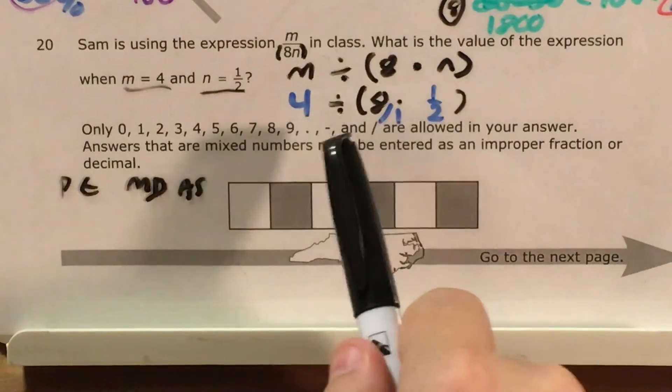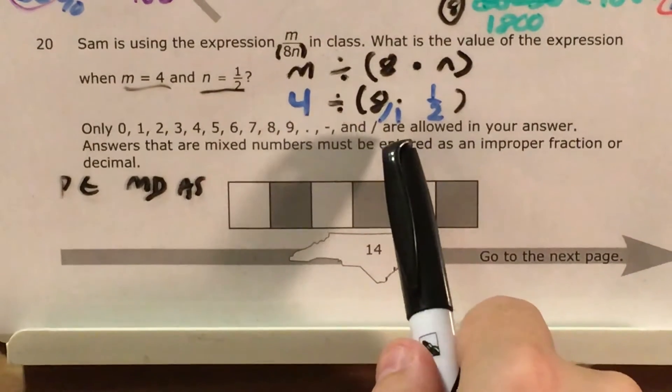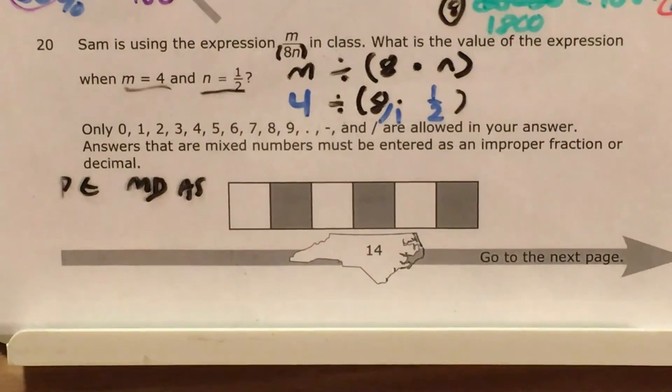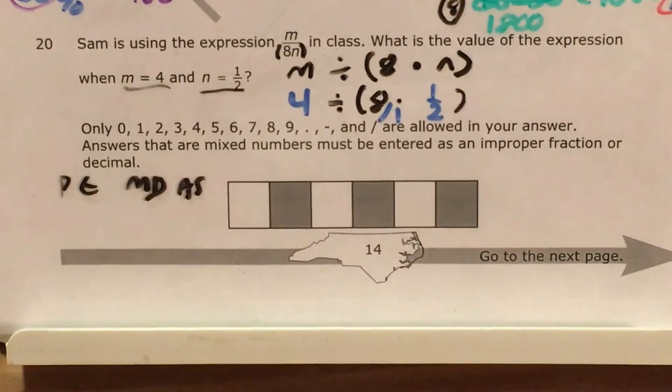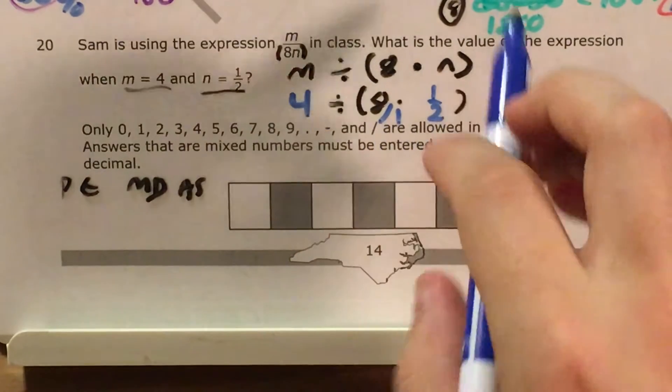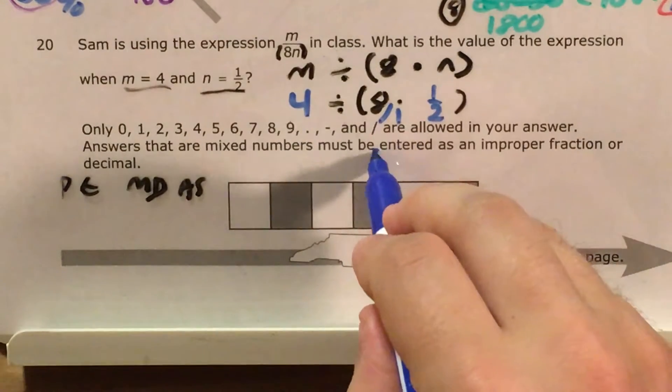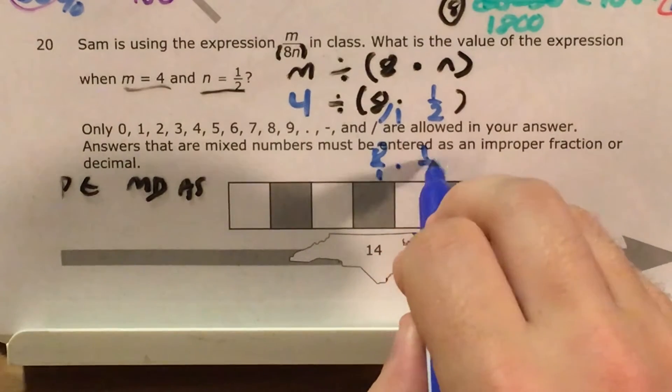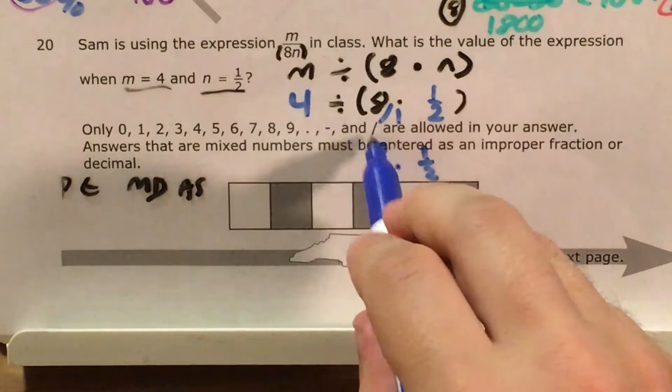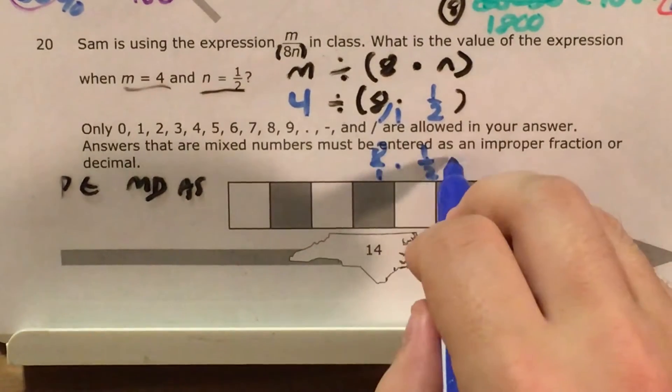But now that I can see that we have 8 ones times 1 half in parentheses, I can go ahead and just figure out what that is. So 8 ones times 1 half. If I multiply across my numerators and across my denominators,